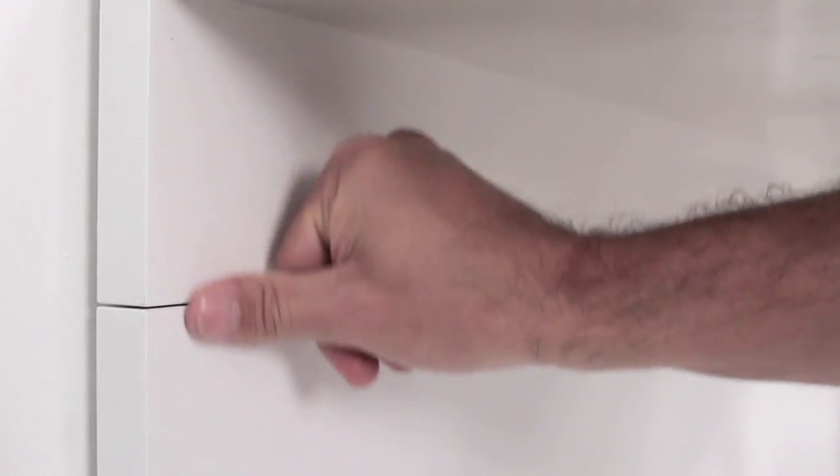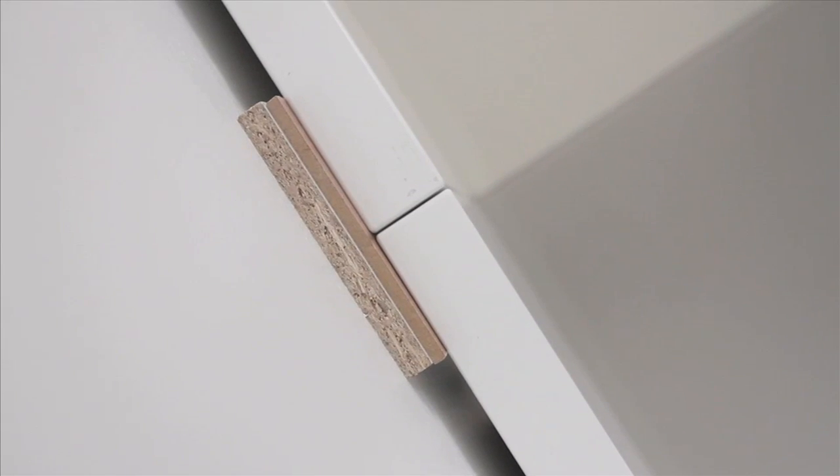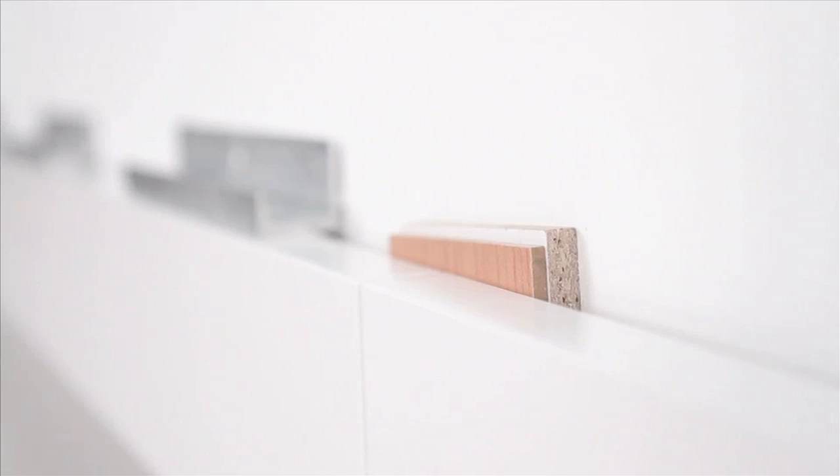Each stage of the fitting process, check that everything really is flush and that there is no gap between the wall panels. Depending on the wall, you will sometimes need to make adjustments using thin wedges of wood or bits of veneer.